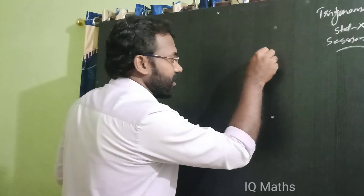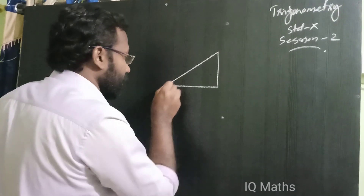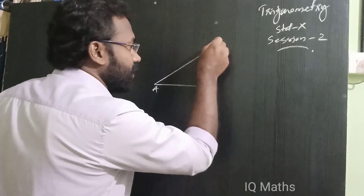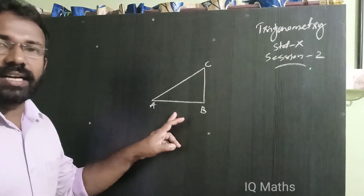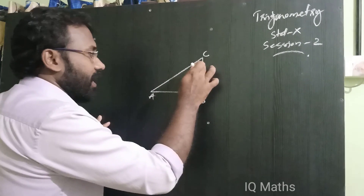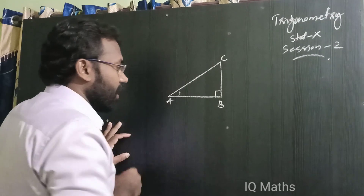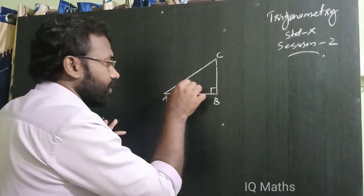In our first session, we covered sin, cos, tan, sec, cosec, and cot ratios. We will consider a triangle ABC, which is a right-angle triangle with the right angle at B. A and C are acute angles, and we will take angle A as theta.